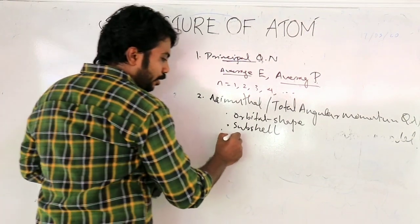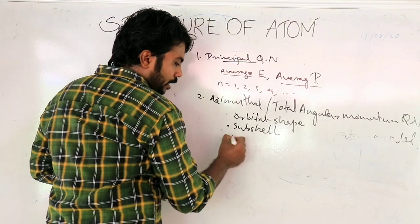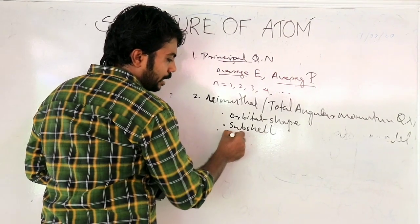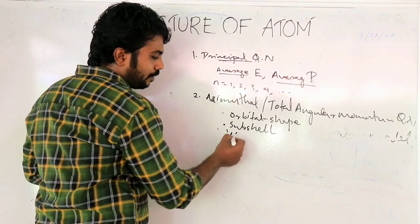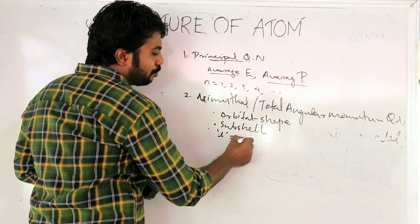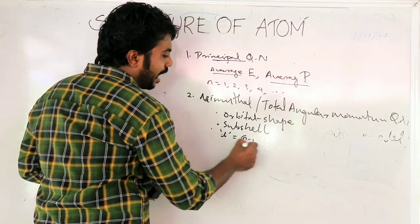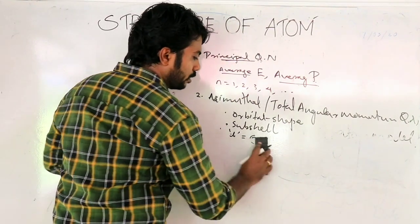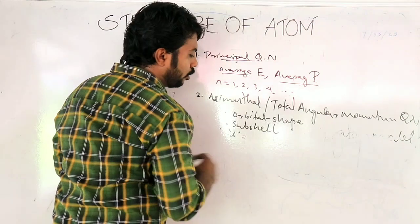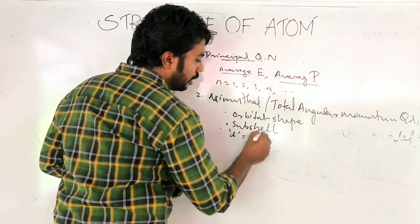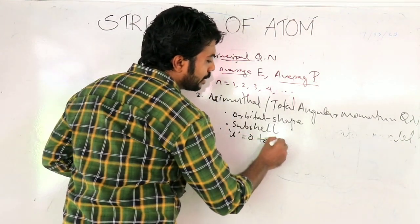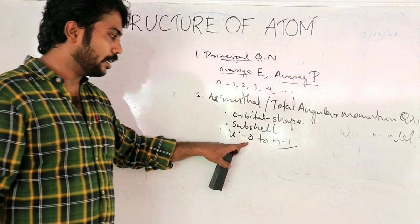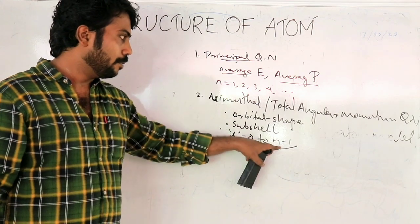The value of the Azimuthal quantum number runs from 0 to n-1, where n is the value of the Principal quantum number.